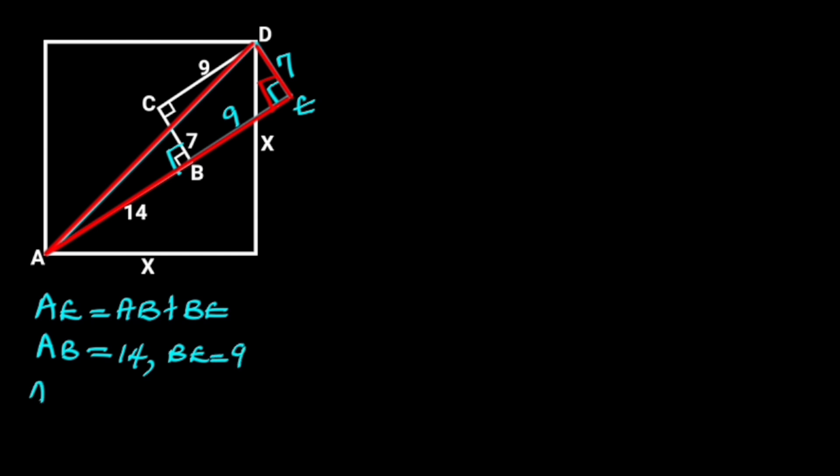It follows that AE is equal to 14 plus 9. 14 plus 9 is 23 units, so AE is 23 units, and DE is 7 units.